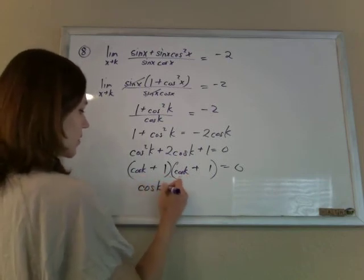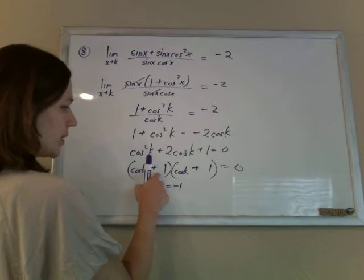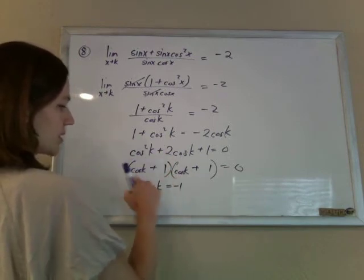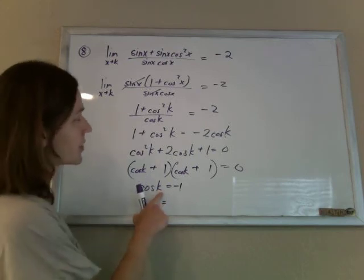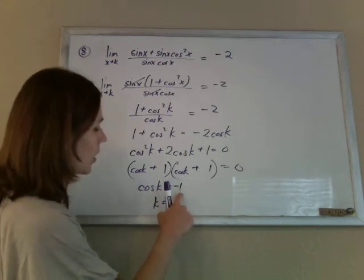So this means that the cosine of k should be negative 1 if that thing wants to be 0. And what angles give me a cosine of negative 1?